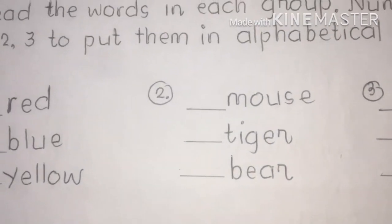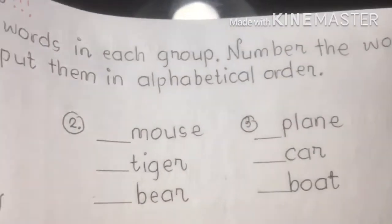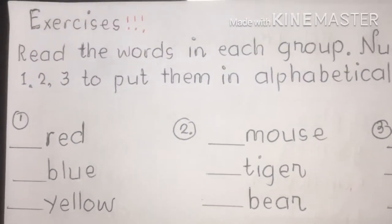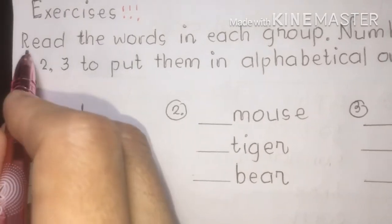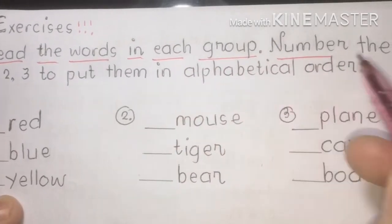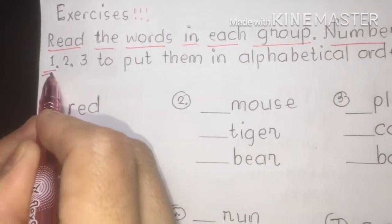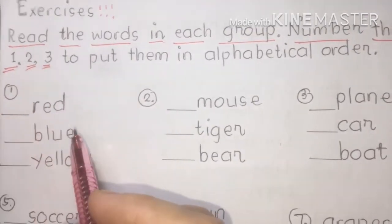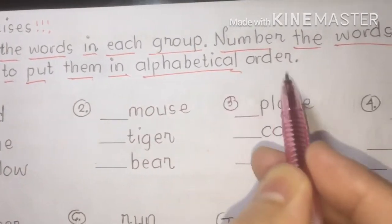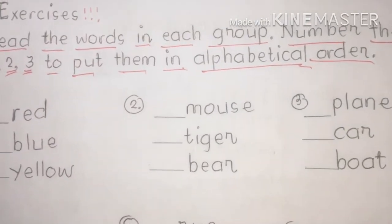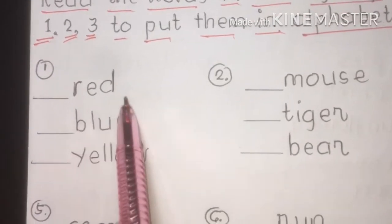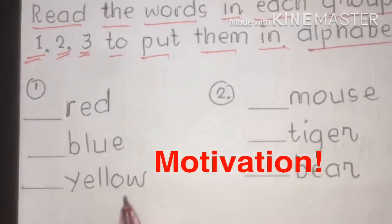Now let's have our exercises. Don't forget to read the directions — the directions help us know what to do. Read the words in each group and number the words one, two, three — first, second, and third — to put them in alphabetical order.